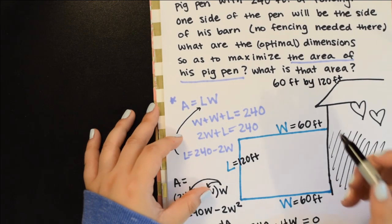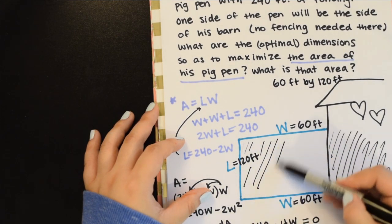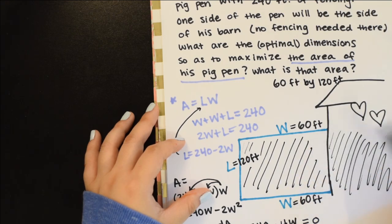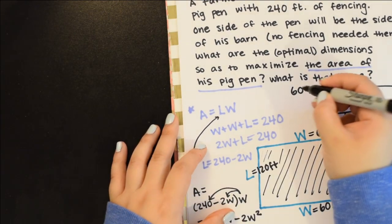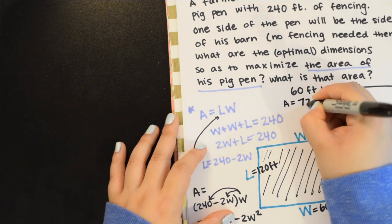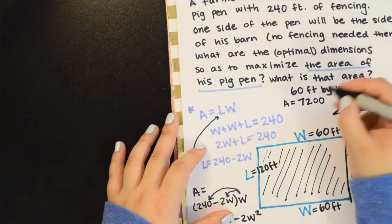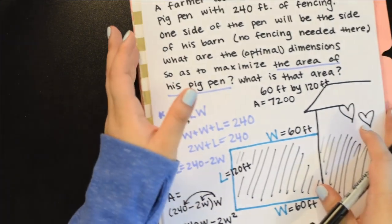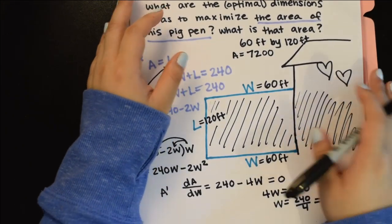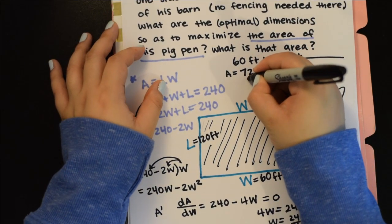The area would then be 60 times 120, which would be 7200 square feet. If you're taking the actual AP, always write in your units.